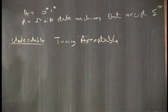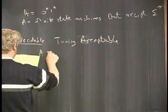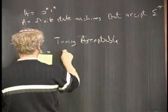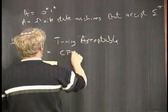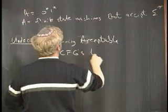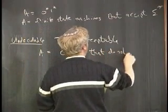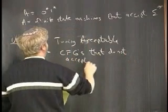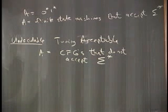Those are recursive sets. What's an example of a recursively enumerable set? CFGs that do not accept sigma star. That's a recursively enumerable set.